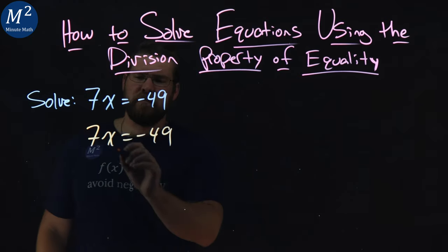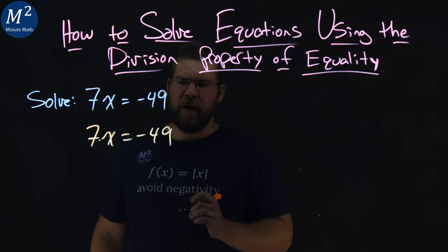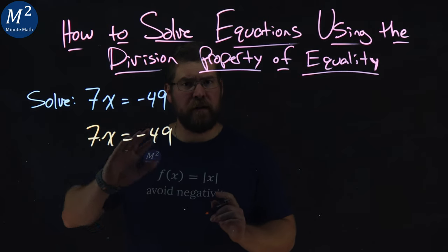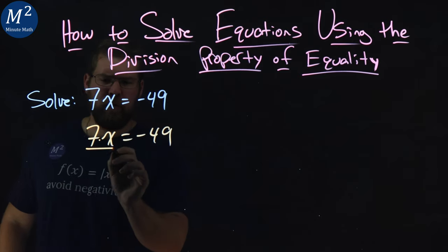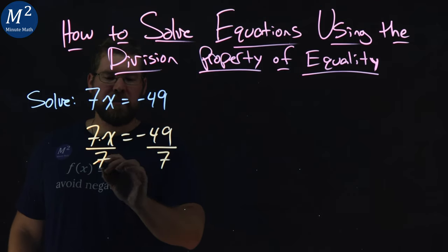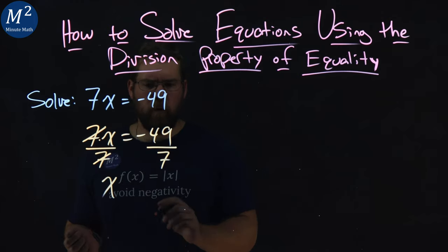7x is 7 times x, and if I divide by 7 to both sides of the equation, the left-hand side 7 is going to disappear. So if I do that, divide both sides by 7, 7 divided by 7 is 1, and we're left with 1x on the left, which we just write as x.